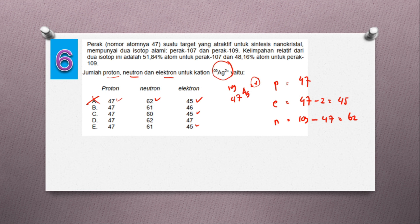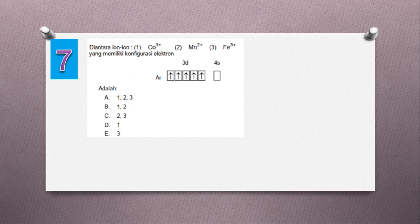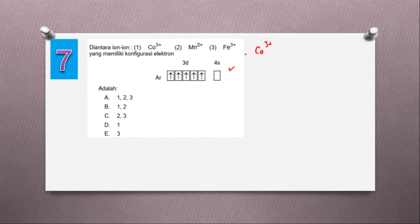Kita lanjut ke soal nomor 7. Di antara ion-ion CO3+, Mn2+, dan Fe3+, yang memiliki konfigurasi elektron seperti berikut. Kita mulai dari CO3+. Cobalt, CO, nomor atomnya 27. Kita buat konfigurasi elektronnya.